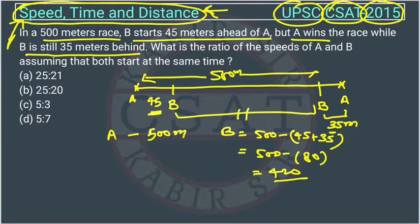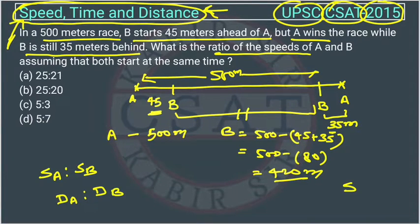B is covering 420 meter distance and A is covering 500 meters. They are asking for the ratio of speeds. We know that the ratio of speeds will be equal to the ratio of distance traveled by A and the distance traveled by B, because speeds are in direct proportion to distance when time is constant.